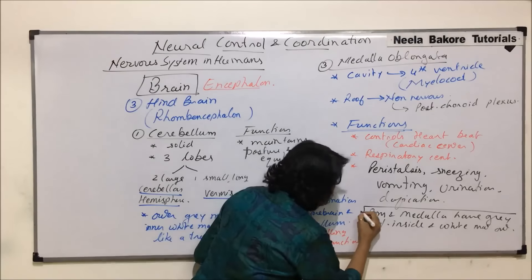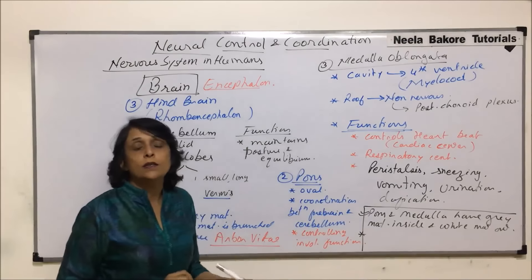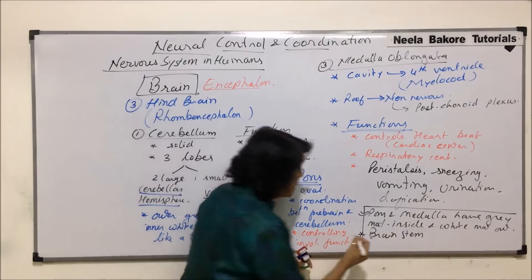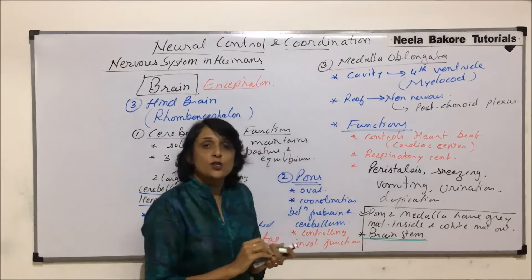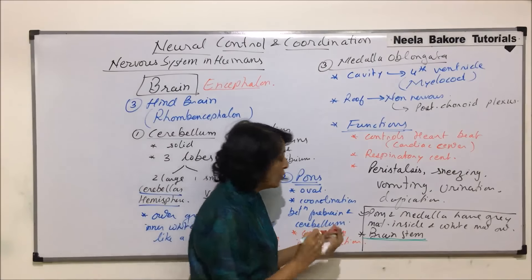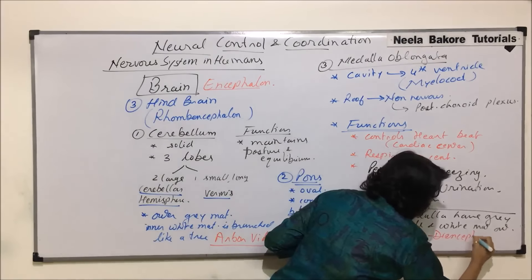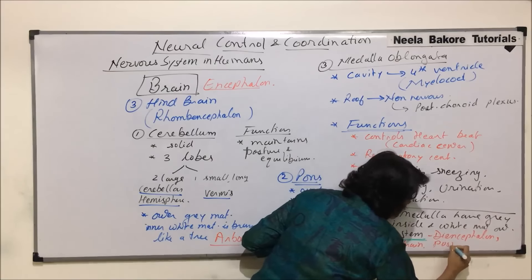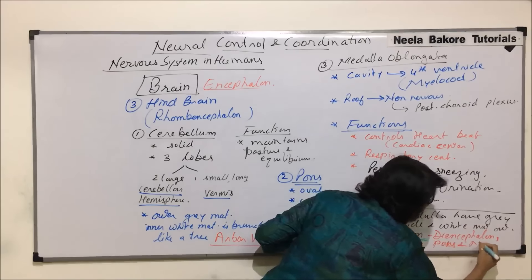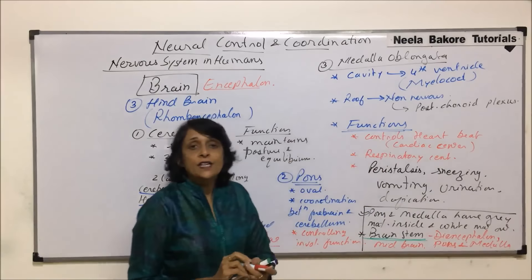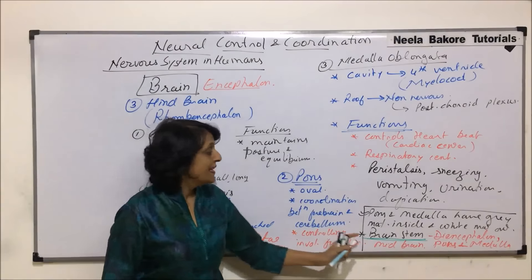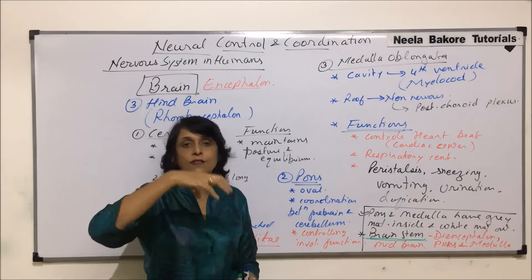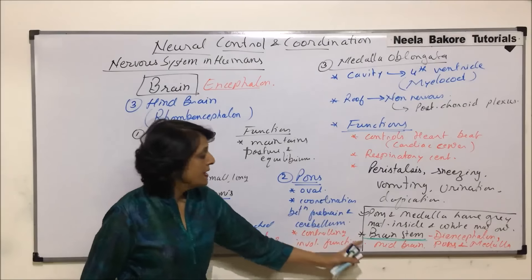Another important concept is the brain stem. Brain stem is not a single structure but a collective term for diencephalon, midbrain, pons, and medulla together. It is called brain stem because it acts as a stalk-like structure holding the most important part of the brain above it.